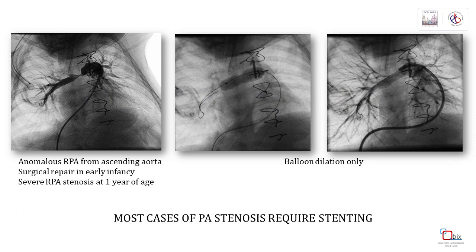This is an angiogram of a child one year following repair of anomalous RPA from the aorta. He had an excellent outcome from balloon dilation alone. The original pathology and the fairly recent surgery must have been favourable for this uncommon outcome.